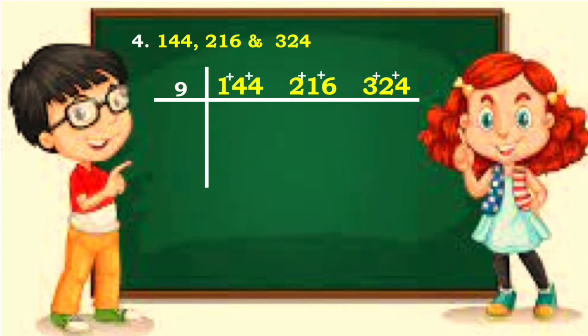Let's divide. 144 divided by 9 is 16. 216 divided by 9 is 24. Then 324 divided by 9 is 36. 16, 24 and 36 are multiples of 4. So divide them by 4.